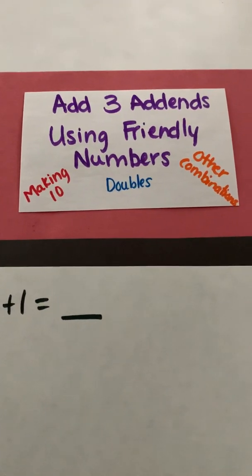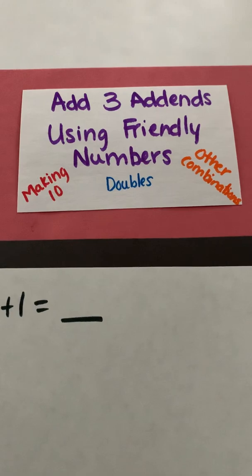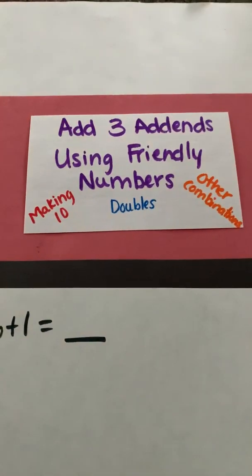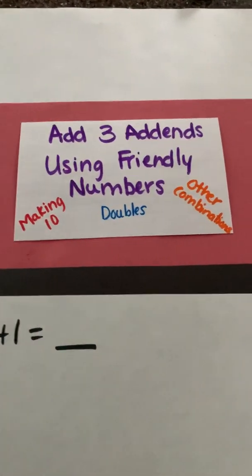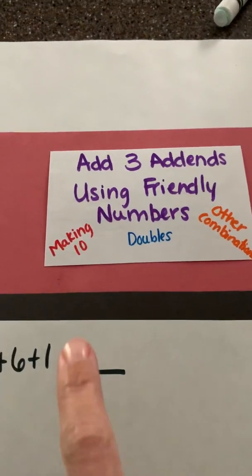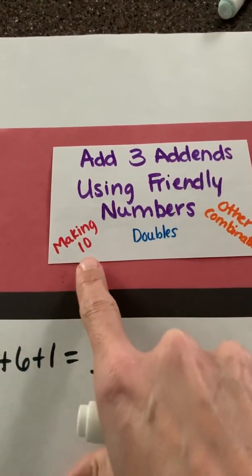This video will focus on adding three addends using friendly numbers. Earlier this week we looked at adding three addends by making a 10.